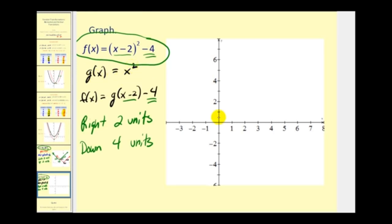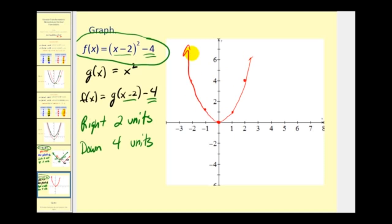To graph this, we first sketch the parent function g of x equals x squared — a parabola with its vertex at the origin. Key points include the vertex at (0, 0), (1, 1), (2, 4), and their mirror images on the other side of the y-axis. We then pick these key points and shift each one right 2 units and down 4 units.